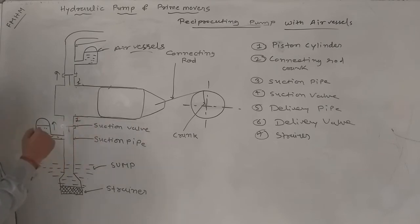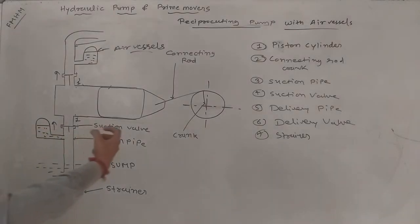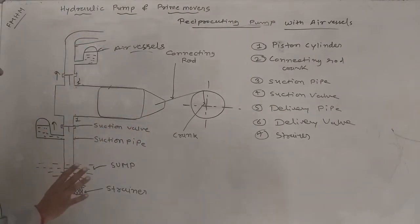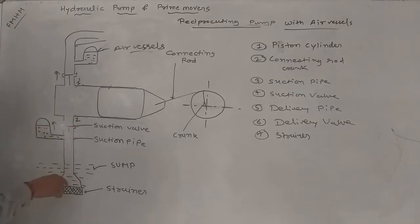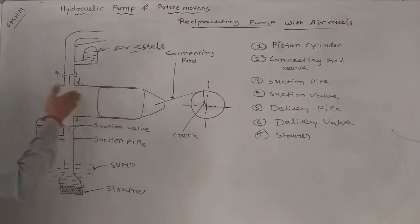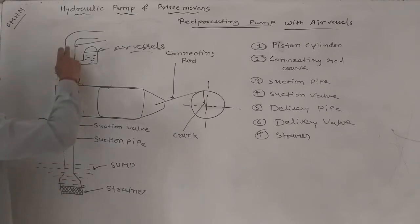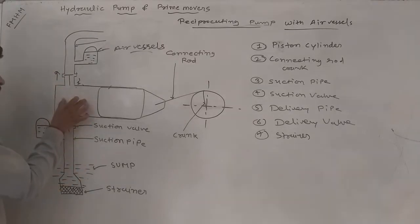Without an air vessel, the discharge is not continuous — there is one suction stroke and one compression stroke, so flow is intermittent. When the air vessel is introduced, we maintain pressure in the suction and discharge pipes connected to the piston cylinder, ensuring more uniform flow.